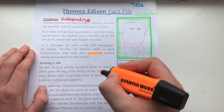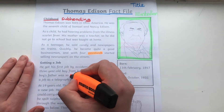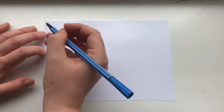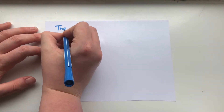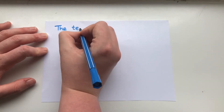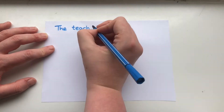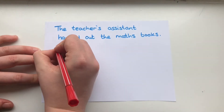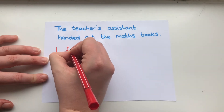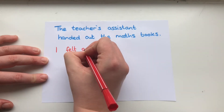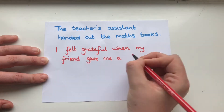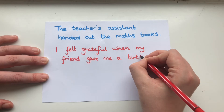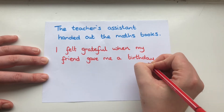Fact Files can be a really good source for interesting vocabulary. So have a go at highlighting interesting or unusual words, then discuss the meaning of these words with your child, or even look them up in a dictionary, and then see if your child can write their own sentences including those words.